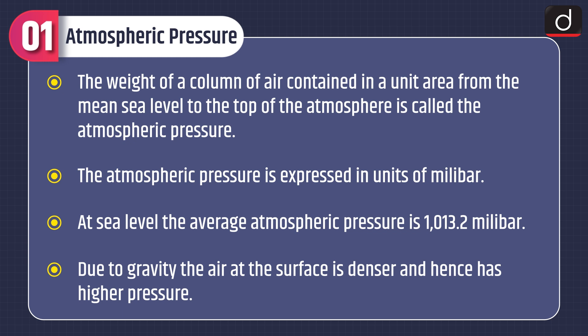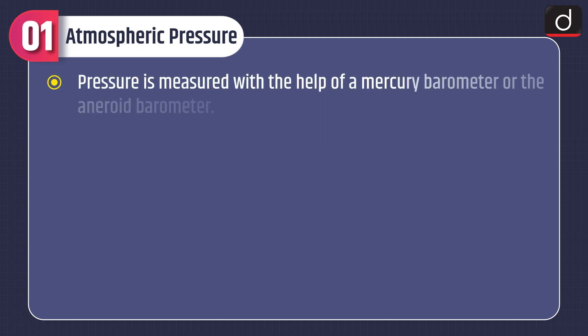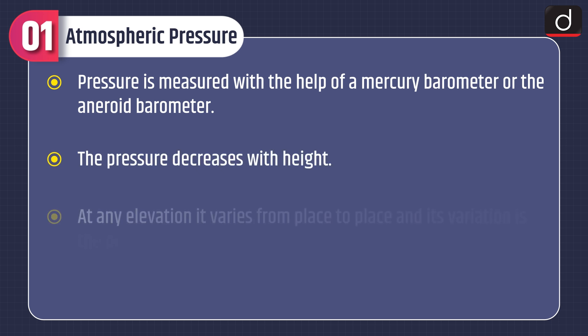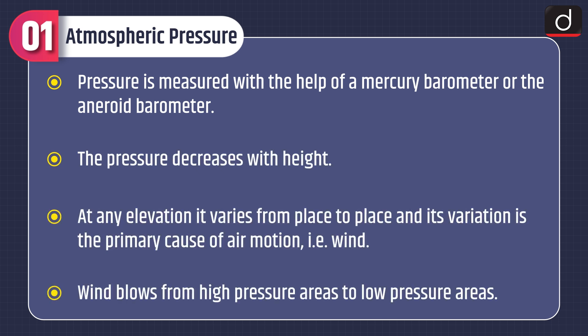Due to gravity, the air at the surface is denser and hence has higher pressure. Pressure is measured with the help of a mercury barometer or the aneroid barometer. The pressure decreases with height. At any elevation, it varies from place to place and its variation is the primary cause of air motion, i.e. wind. Wind blows from high pressure areas to low pressure areas.